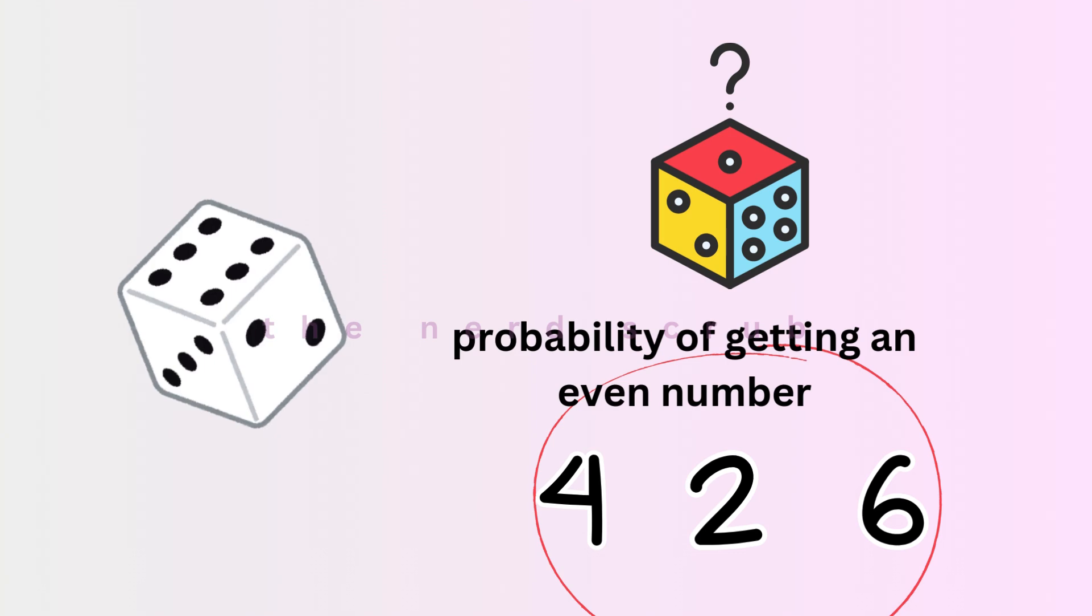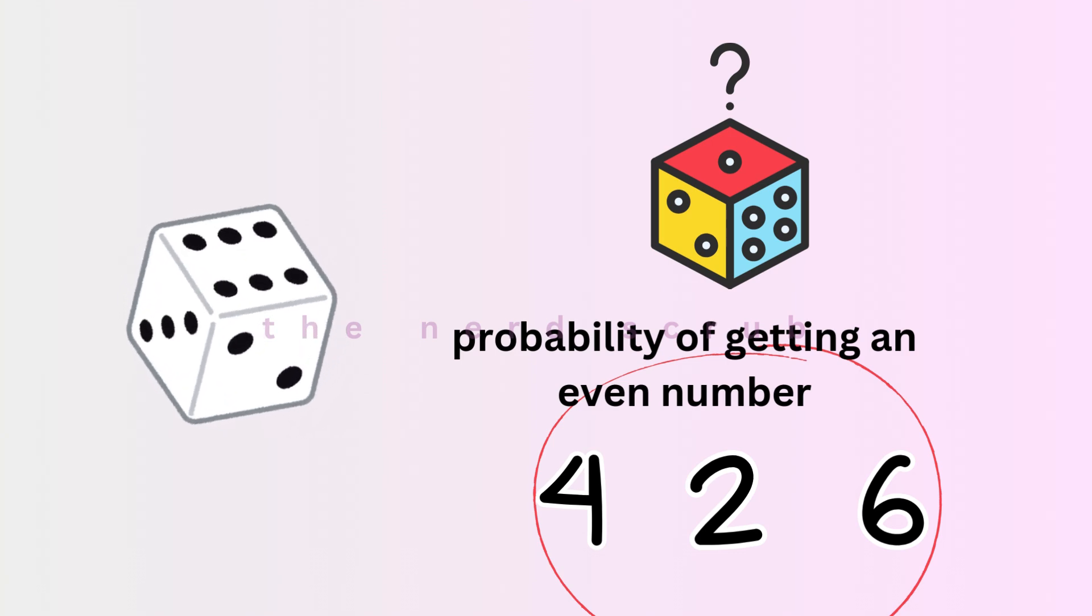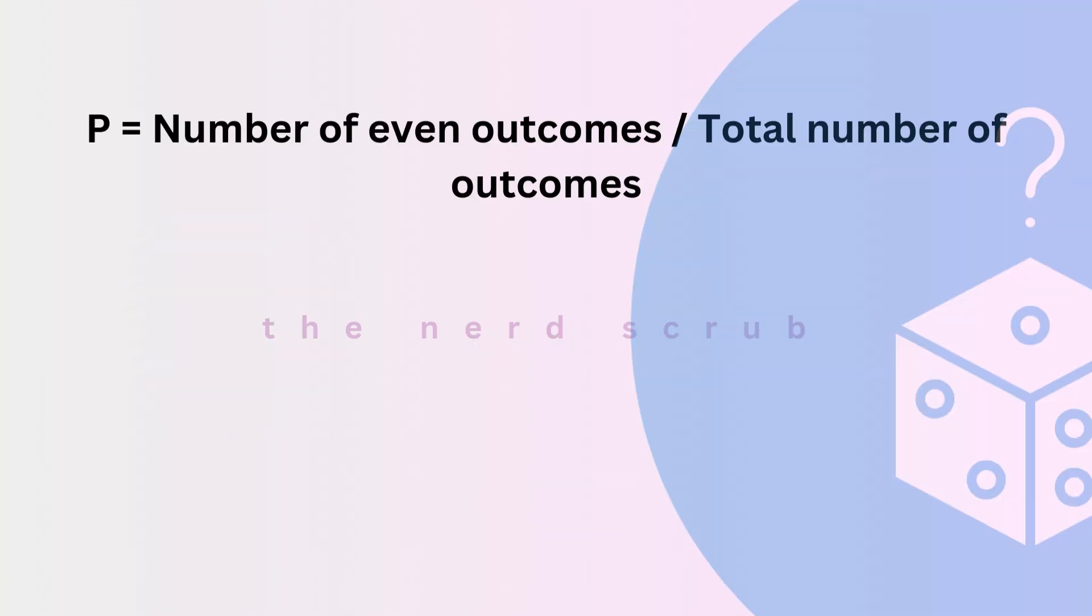The total number of possible outcomes when rolling a die is six. So, the probability of getting an even number is the ratio of favorable outcomes to total outcomes. In this case,